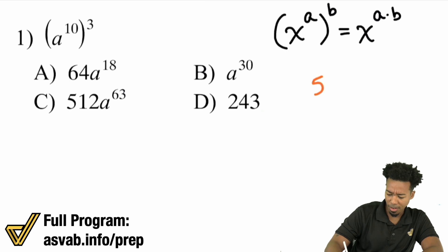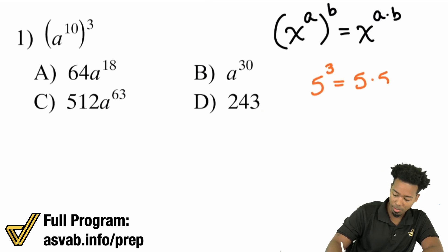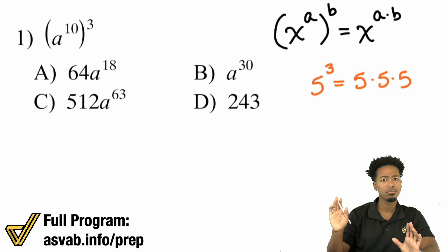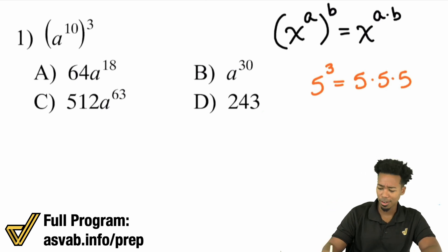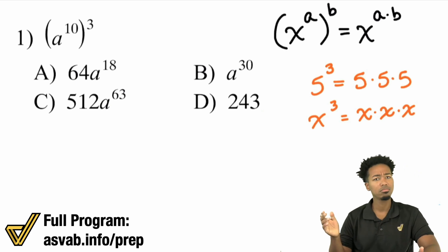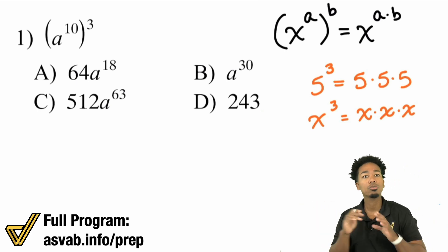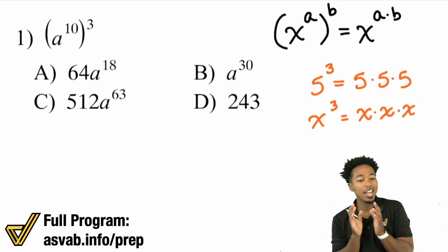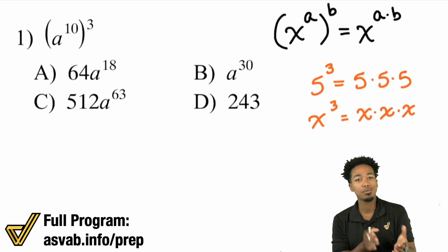5 to the power of 3 means 5 times itself 3 times. And if I have a variable — x to the power of 3 — that means x multiplied by itself 3 times. We know what an exponent means.